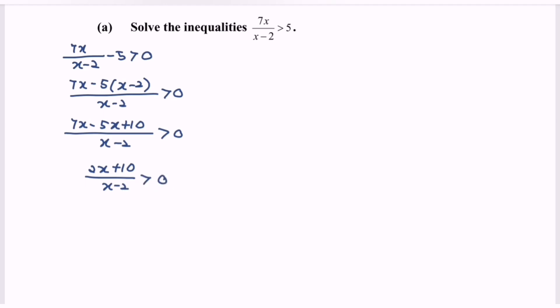If we simplify the situation, we will have 2 bracket x plus 5 over x minus 2. Notice that this is the simplest form. Now we are going to identify the sign, which is greater than 0. So it is positive.